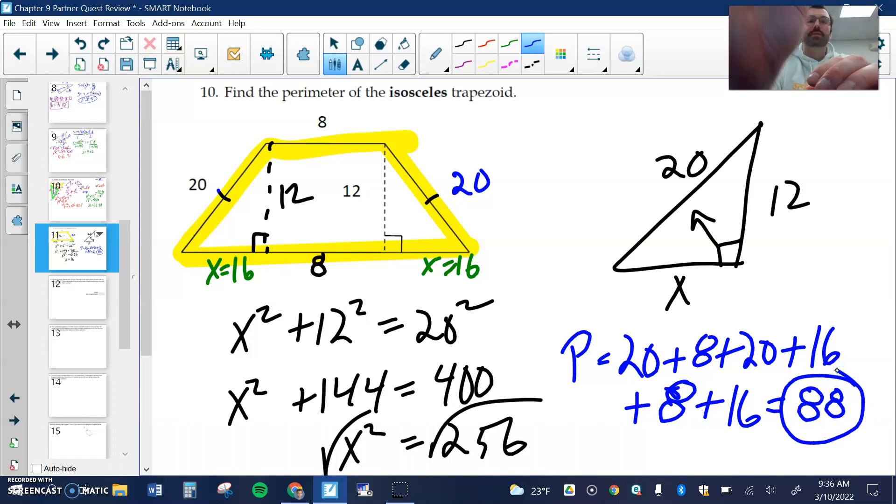A common mistake is to include the 12s. Don't include the 12. It's on the inside and perimeter is the outside of our shape. Let's keep going to number 11.